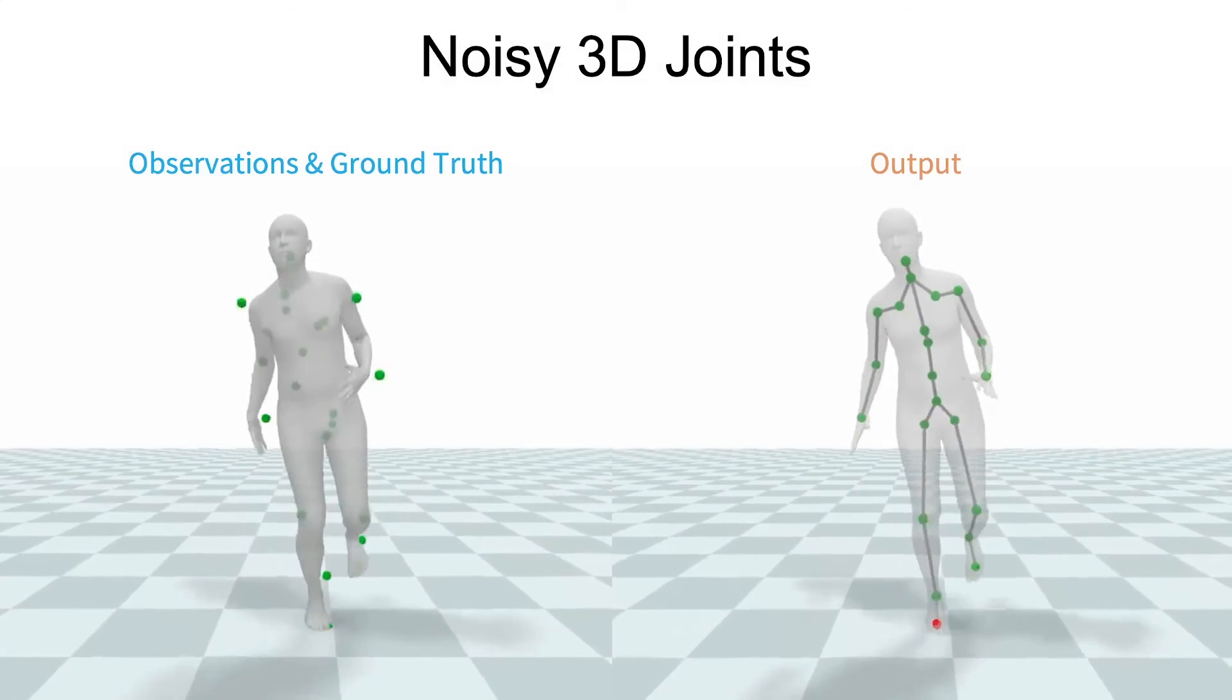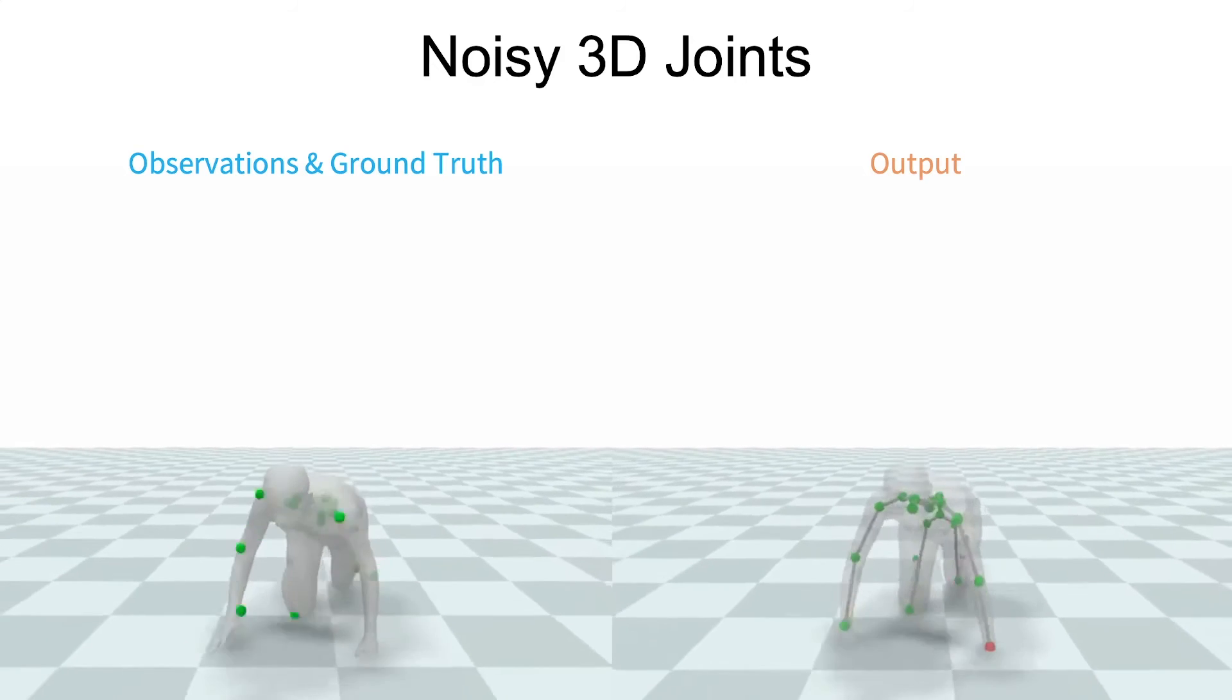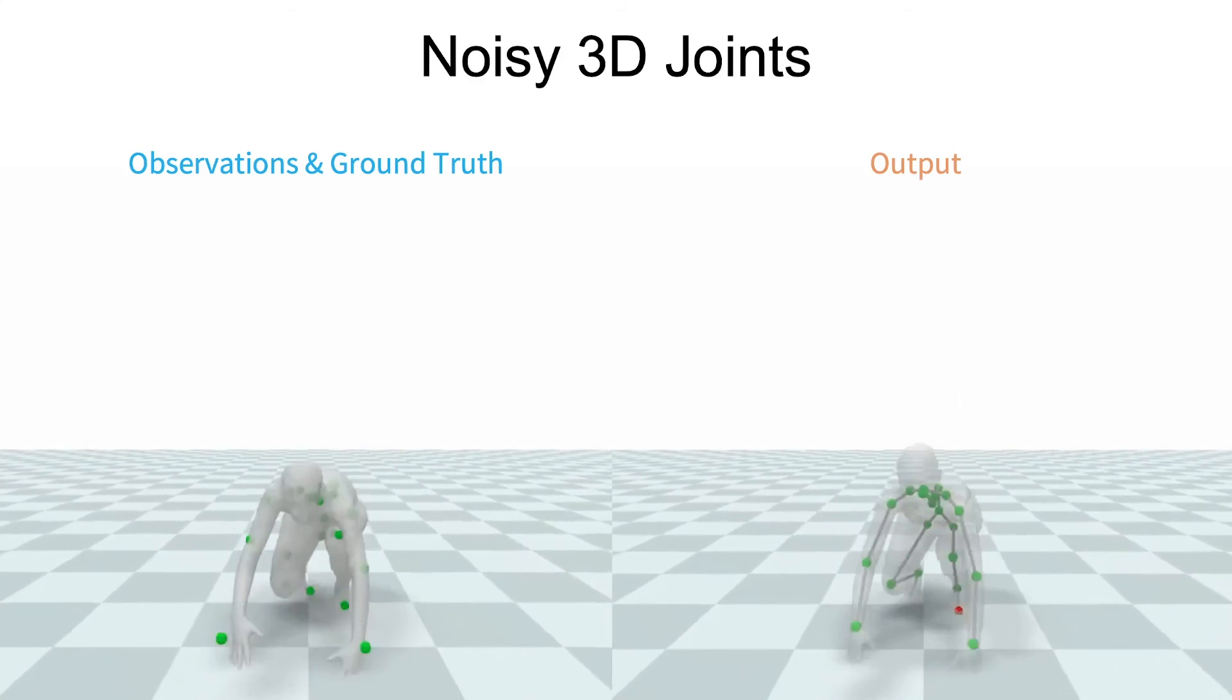The proposed optimization can also handle extremely noisy inputs as shown here. Ground contacts, which are a nice byproduct of parametrizing motion with Humor, are visualized on the output.